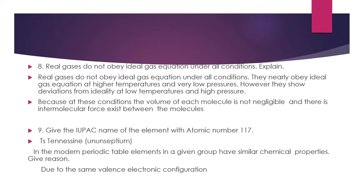Question 9: Give the IUPAC name of the element with atomic number 117. According to IUPAC convention it was initially named Ununseptium (sept for seven), but now it is represented as Ts and the name is Tennessine.